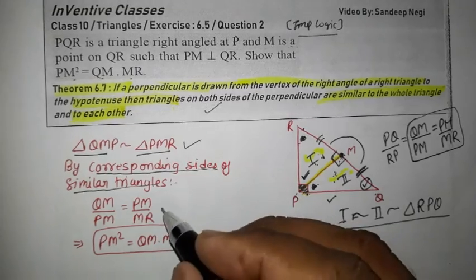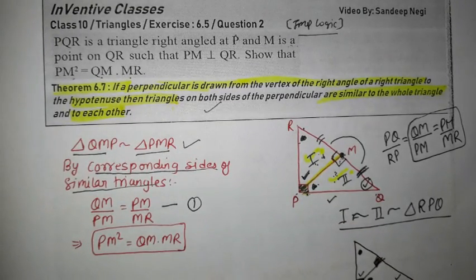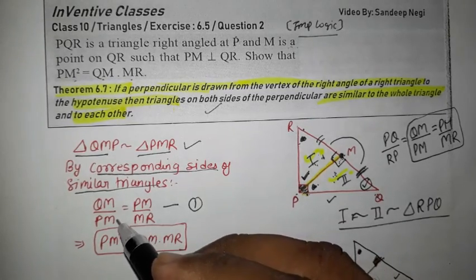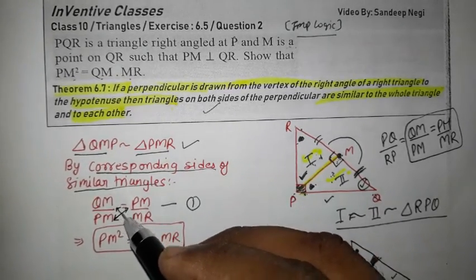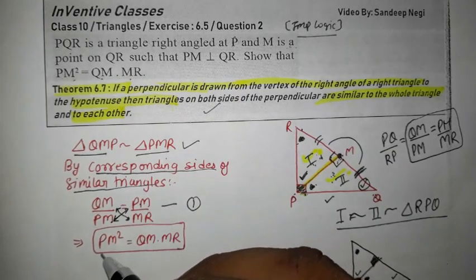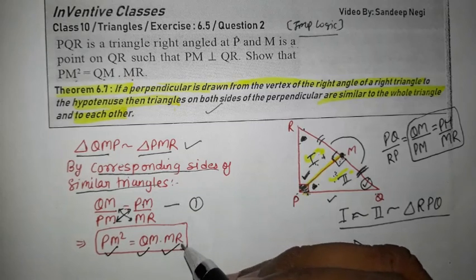We can directly write this equation and then last step we just cross multiply. So PM² equals QM into MR. Thank you.